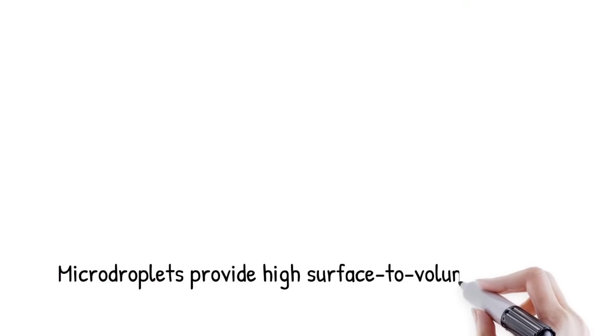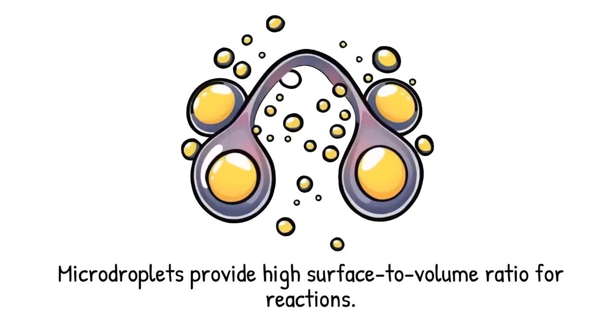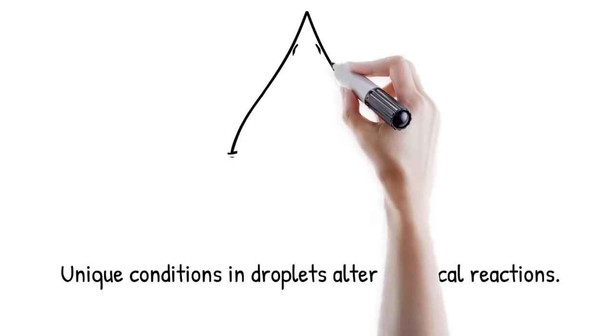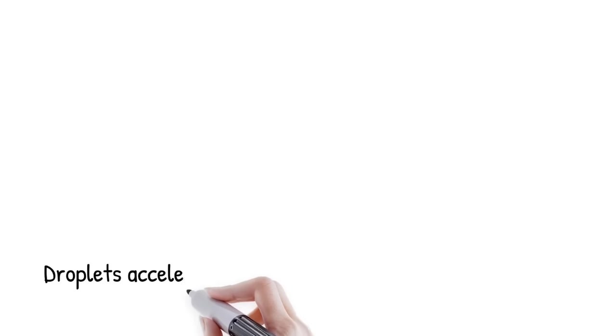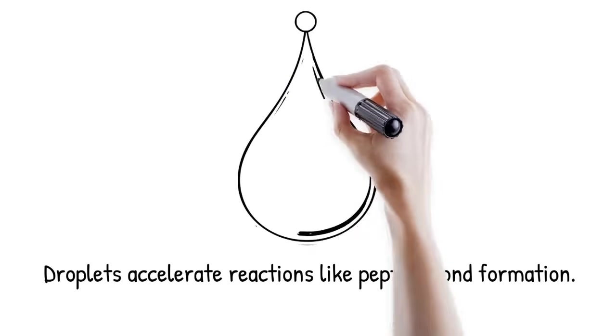Micro-droplets—tiny liquid compartments ranging from micrometers to nanometers in size—have emerged as powerful environments for chemical transformations. Unlike bulk solutions, droplets provide an enormous surface-to-volume ratio that exposes a majority of molecules to interfaces. This geometry creates unique physical and chemical conditions unavailable in macroscopic beakers. Charged or neutral droplets can host fields, gradients, and confined phases that alter reaction energetics. These altered micro-environments lower activation barriers for otherwise sluggish reactions.